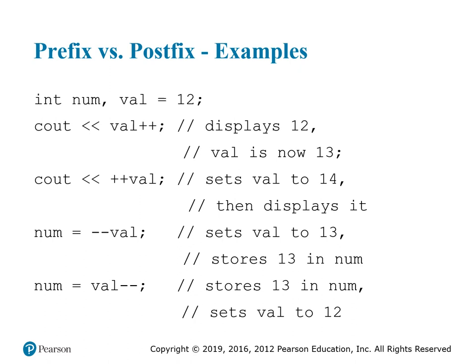For example, if we put cout val++, we take the original value of 12, display that 12, then increment it — the display was 12 but the value ends as 13. If we put the plus-plus before val, we set val to 14 first, then display 14, so it gets incremented before it's used on that line of code.